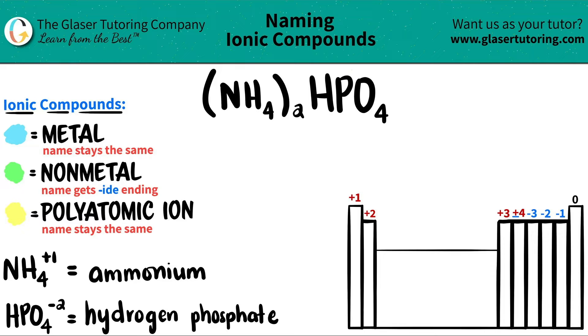In this case, it looks like we have four different elements. We have nitrogen, hydrogen, phosphorus, and oxygen. So it's always easiest to work with your polyatomics first and then fill in the pieces.